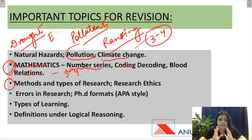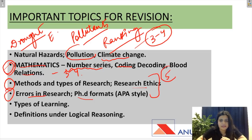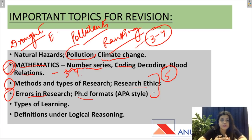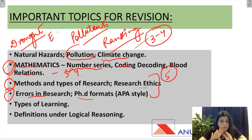Then comes methods and types of research, aur research ethics. Yeh dono parts aur errors in research, PhD format — yahaan se paanch questions ban jate hai kai baar. Ethics ka question bahut aata hai — ethics ke features kya hain jaise accountability, integrity, plagiarism nahi hona chahiye. Methods and types of research mein experimental research, ex post factor research, applied research, action research, fundamental research — inhi ke aas paas questions ghoomenge. Questions thode deep aa sakte hai but mostly yahi se aate hai.